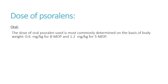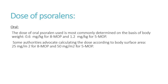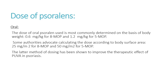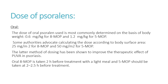The dose of oral psoralen is most commonly determined on the basis of body weight: 0.6 mg/kg for 8-MOP and 1.2 mg/kg for 5-methoxypsoralen. Some authorities advocate calculating the dose according to body surface area: 25 mg per meter squared for 8-MOP and 50 mg per meter squared for 5-MOP. The latter method of dosing has been shown to improve the therapeutic effect of PUVA in psoriasis.